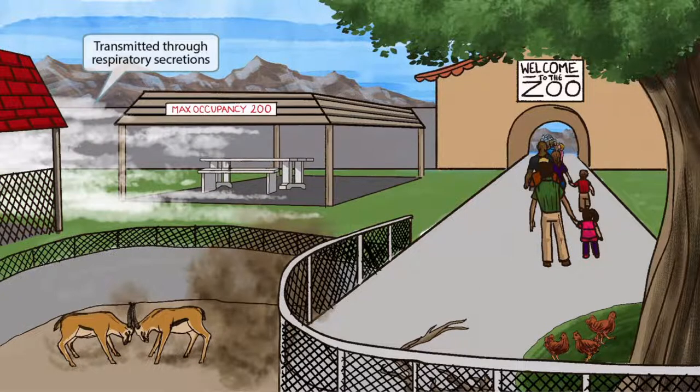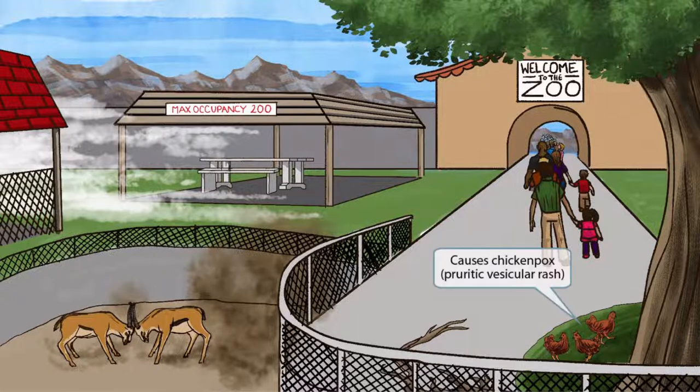Notice that we've shown some fog entering the zoo. This fog, or mist, should help you remember that VZV is transmitted through respiratory secretions.